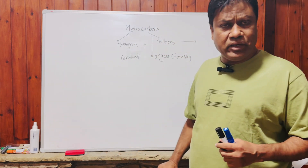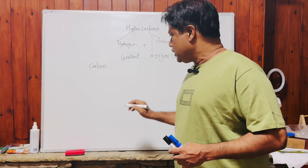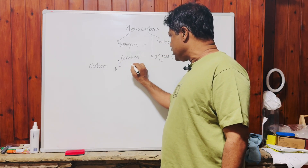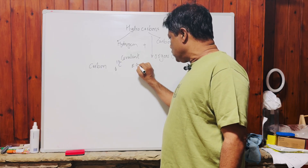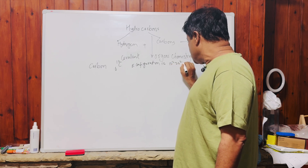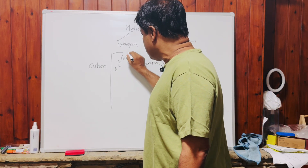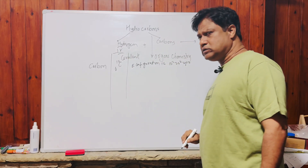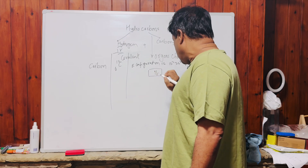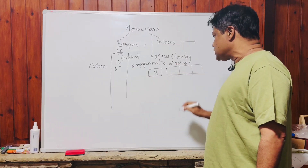Let's look at where carbon is present in the periodic table and why it is so important. Carbon is a non-metal, with symbol C and atomic number 6. It has six electrons, so its electronic configuration is 1s², 2s², 2p². It has four electrons in the outermost shell, which is why carbon is placed in group four. It has two electrons in the s orbital and two electrons in the p orbital.